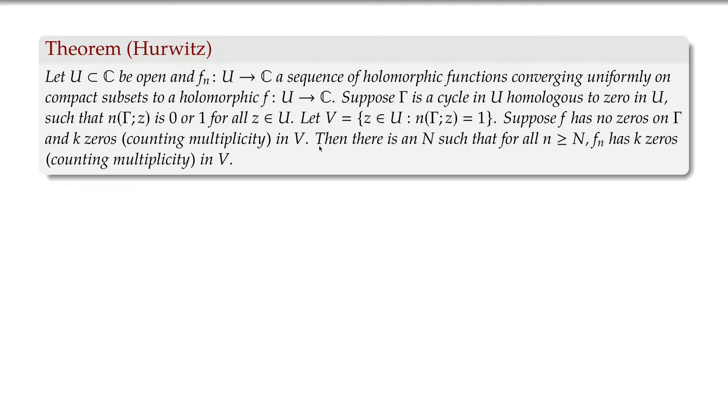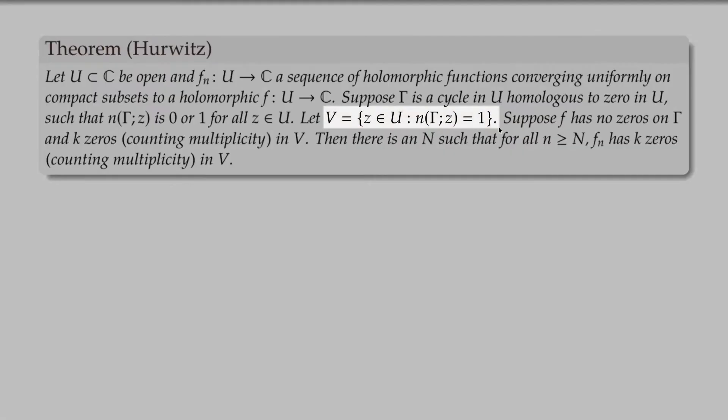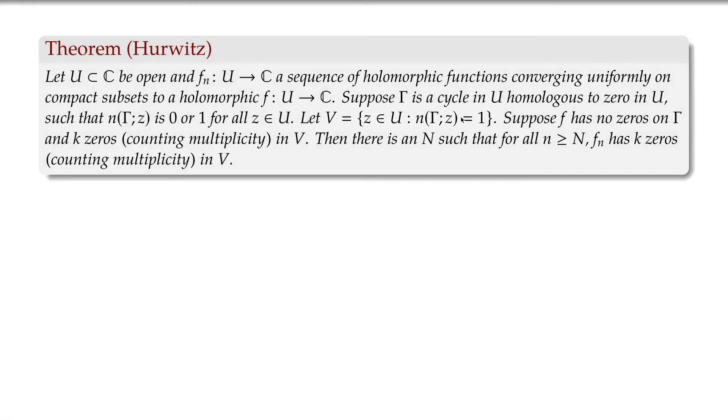And let's suppose that gamma only goes around, at most, once around any point in U, and it only goes around in the positive direction possibly. It goes around some, not around all, of course. And let V be the set that gamma goes around, so all those points where the winding number of gamma around those points is equal to one.